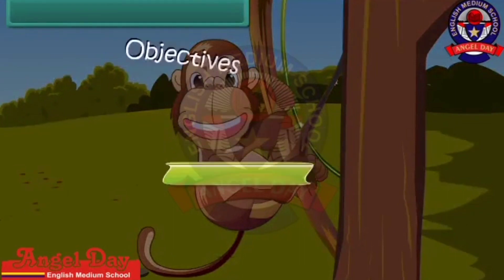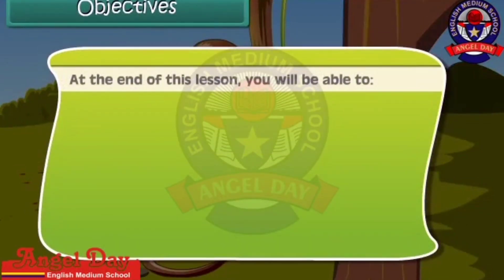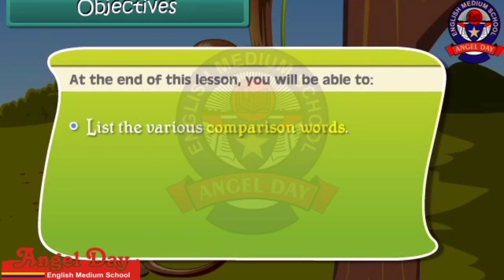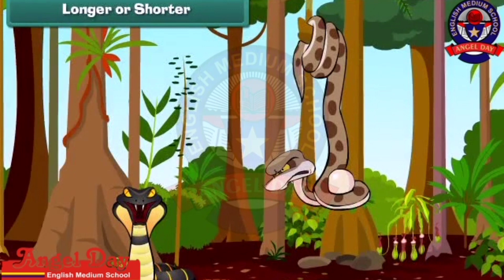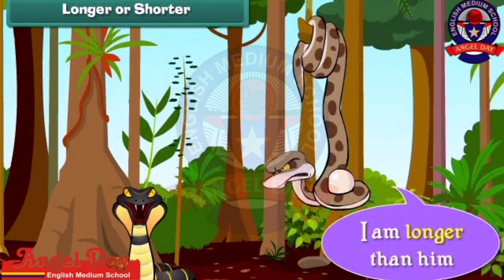At the end of this lesson you will be able to list the various comparison words and give examples using them. When two objects are not of the same size, we compare them. I am longer than he is.